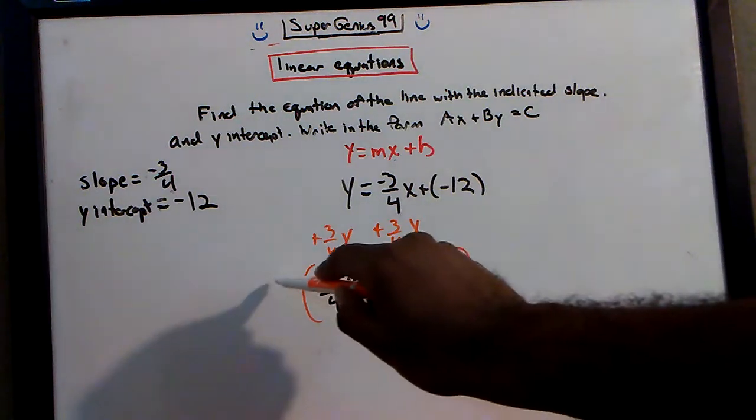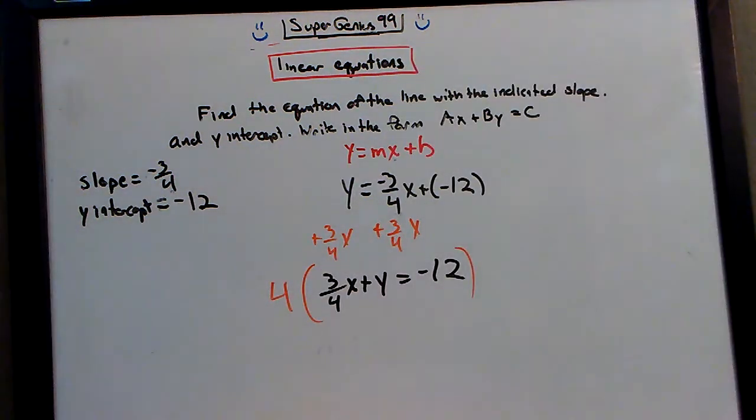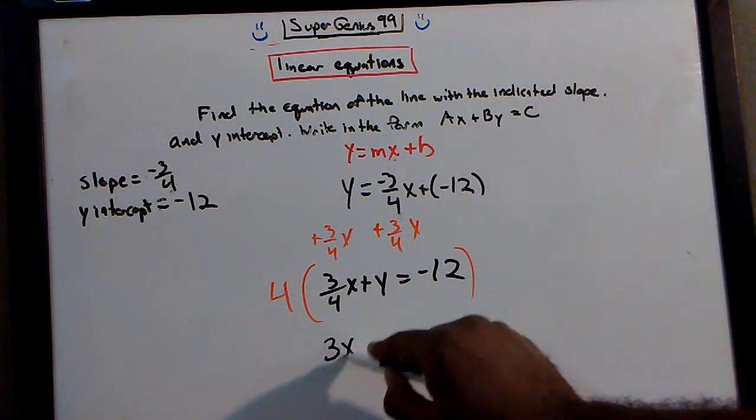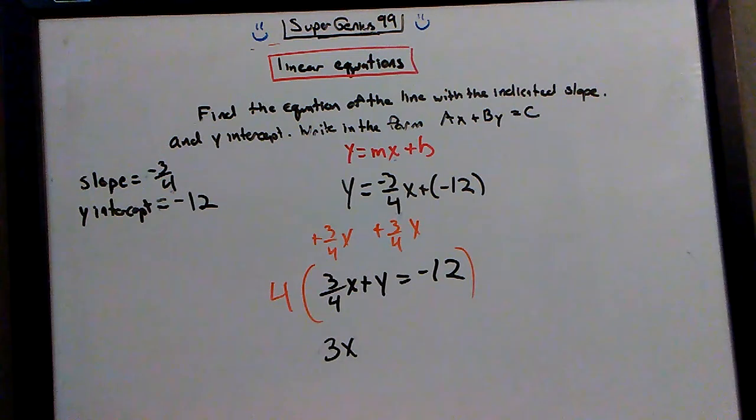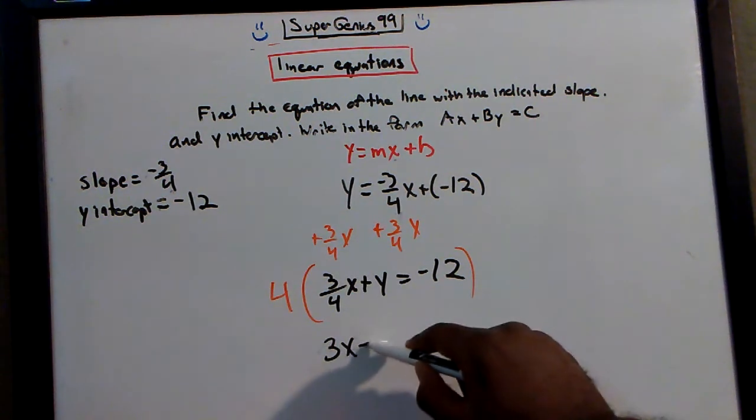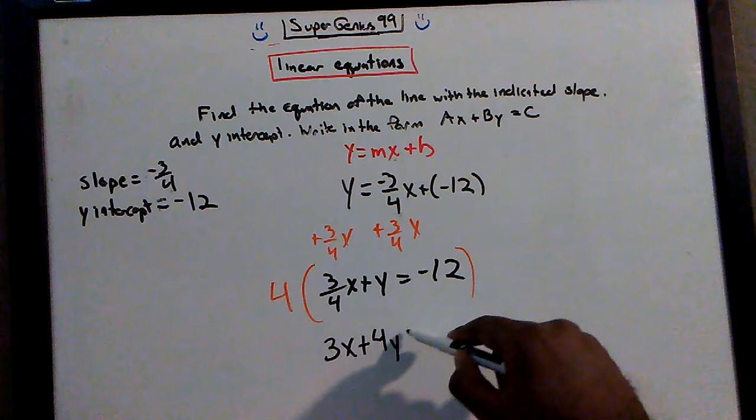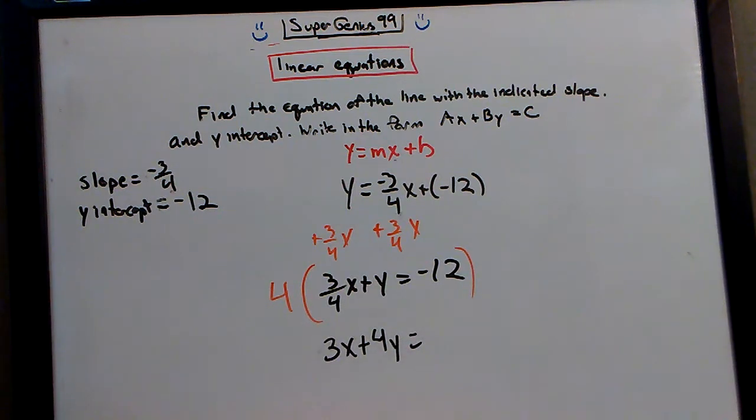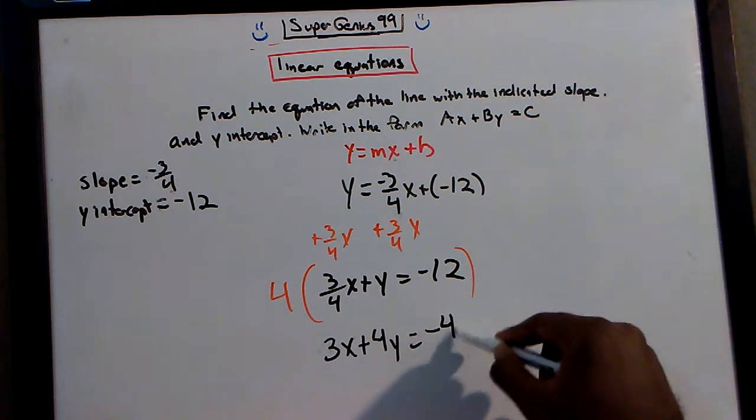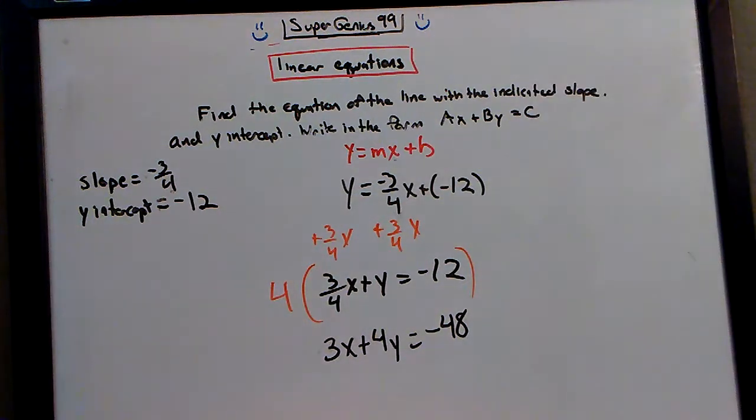No fractions on the x or the y. So what happens when you multiply 4 times 3 fourths? Get a 3x. What happens when you multiply 4 times y? 4y. What happens when you multiply 4 times negative 12? And now you have it in the form of ax plus by equals c.